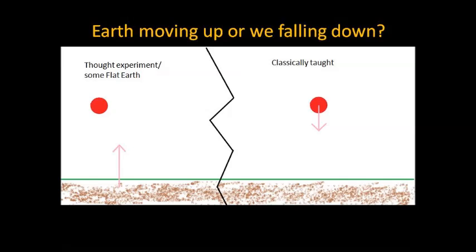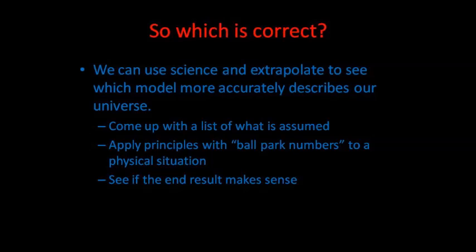So here comes the question that started this whole video. How do we know that everything is falling towards earth? Why can't the earth be speeding up towards any falling object that we consider to be falling? Why isn't it that when you throw a ball up, the earth doesn't rush up to meet it instead of the ball rushing back down to the earth? Well, it turns out that we can use science and extrapolation to figure out which one of these models better fits our reality.